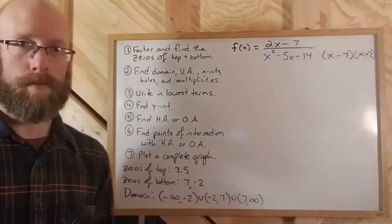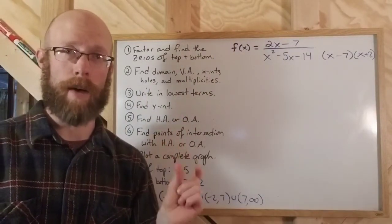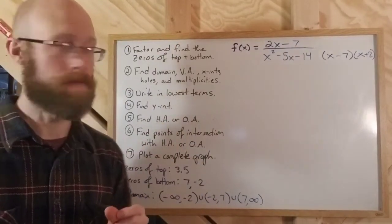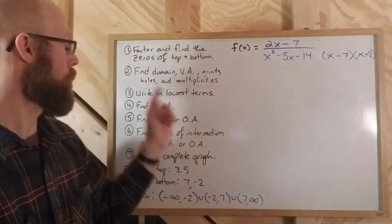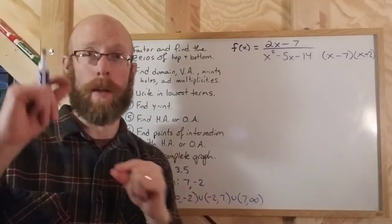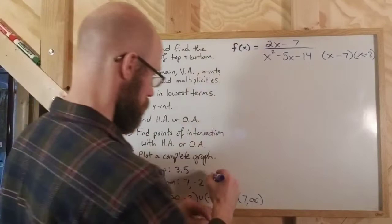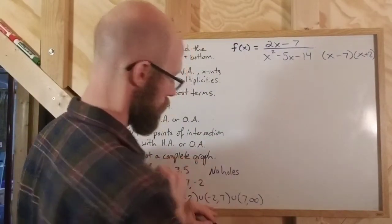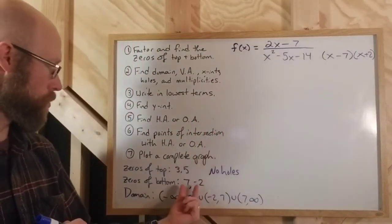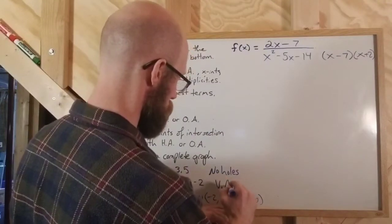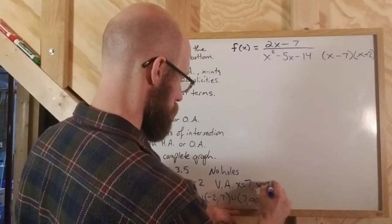Now I'm going to look for vertical asymptotes. Remember, vertical asymptotes occur when you have a zero in the denominator that's not also a zero of the numerator. In this case, there were no shared zeros — no zero in both the top and the bottom. So there aren't going to be any holes. Vertical asymptotes are going to be at x equals 7 and at x equals negative 2.